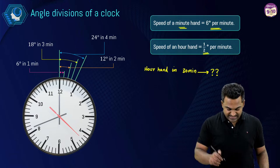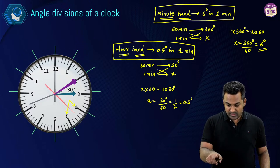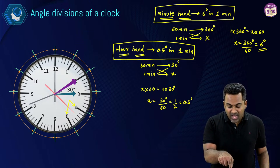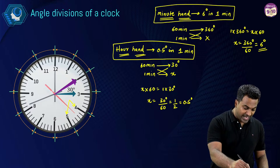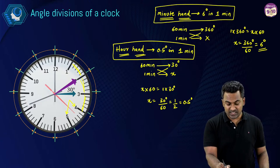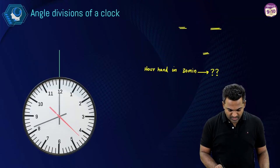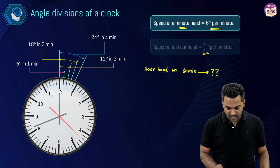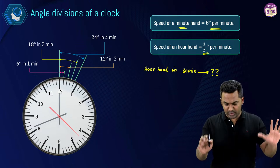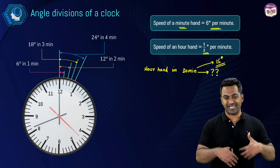A lot of you have said 15 as the answer — well done! That is correct: the hour hand in 30 minutes covers 15 degrees. Another question: the hour hand in 40 minutes covers how many degrees? All of you have given the correct answer — 20 degrees. If it covers half a degree per minute, in 40 minutes it covers 20 degrees.